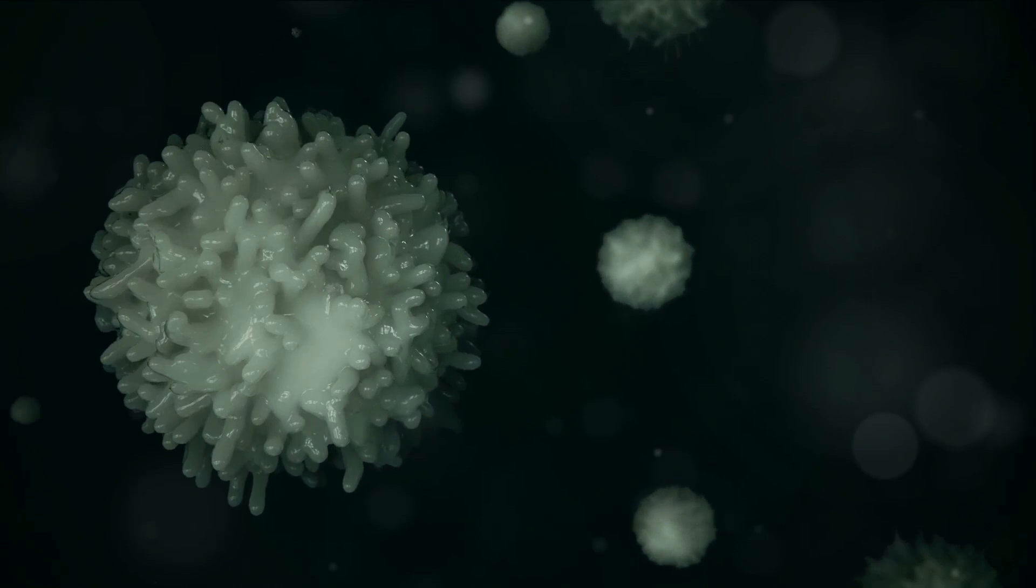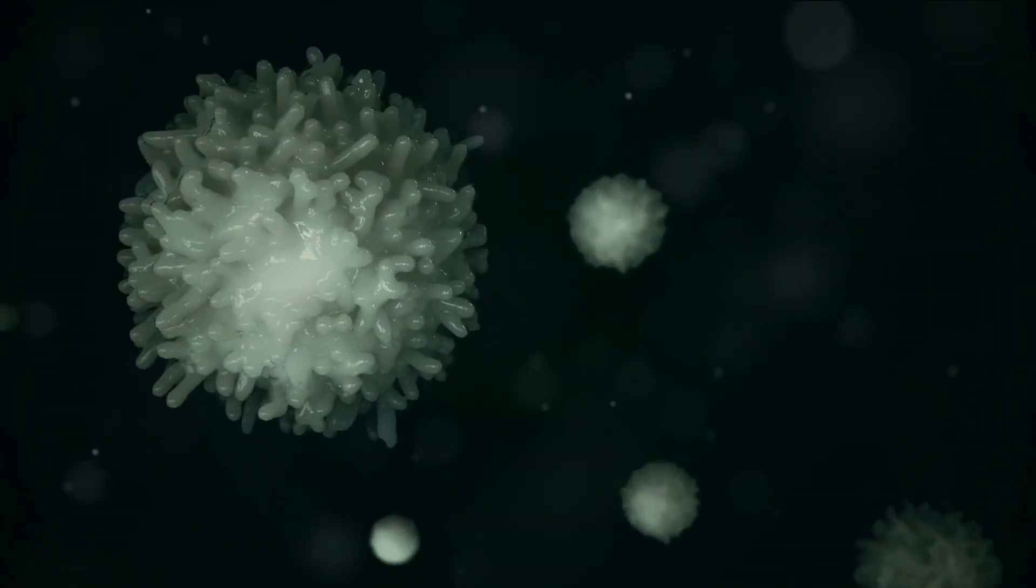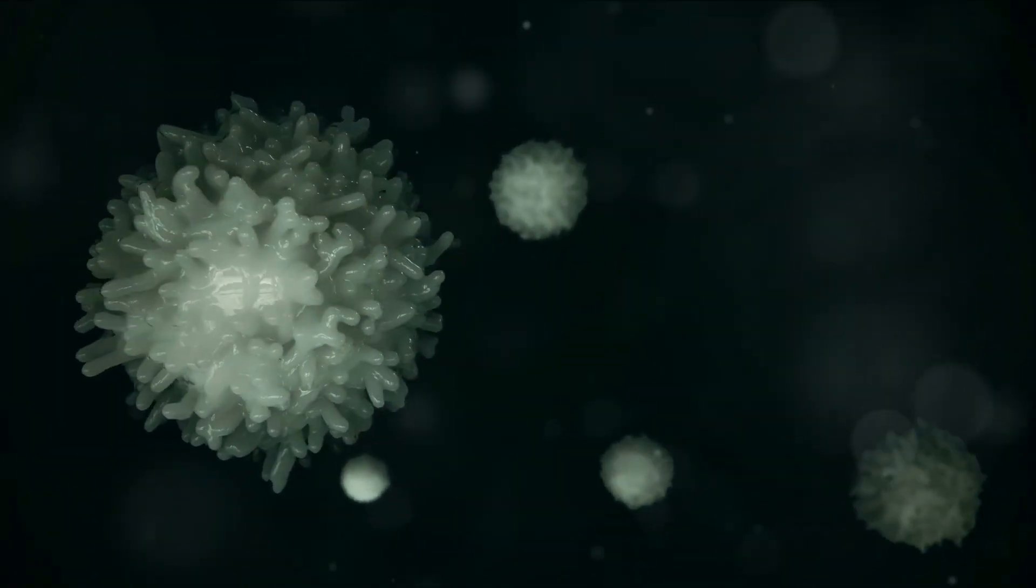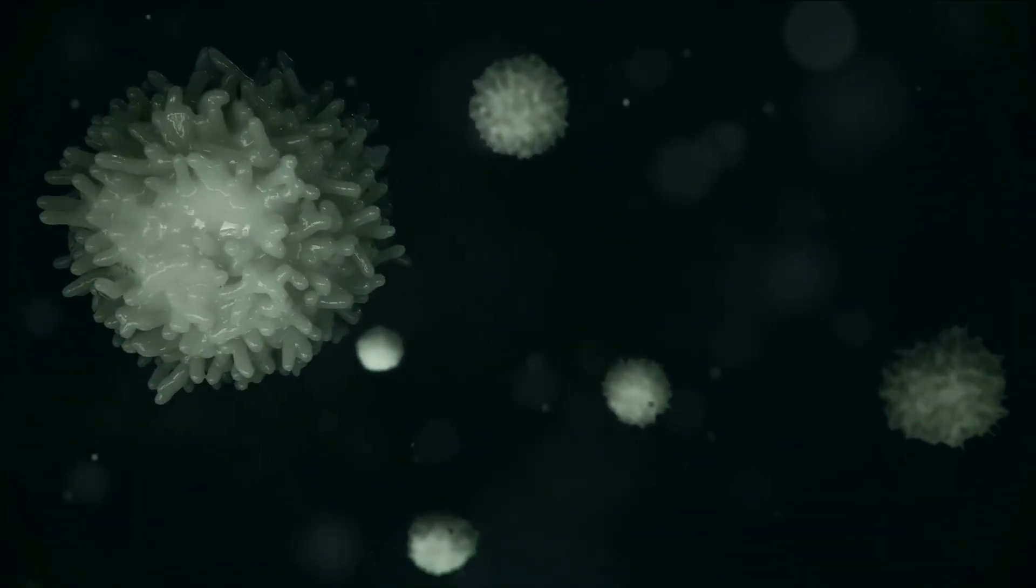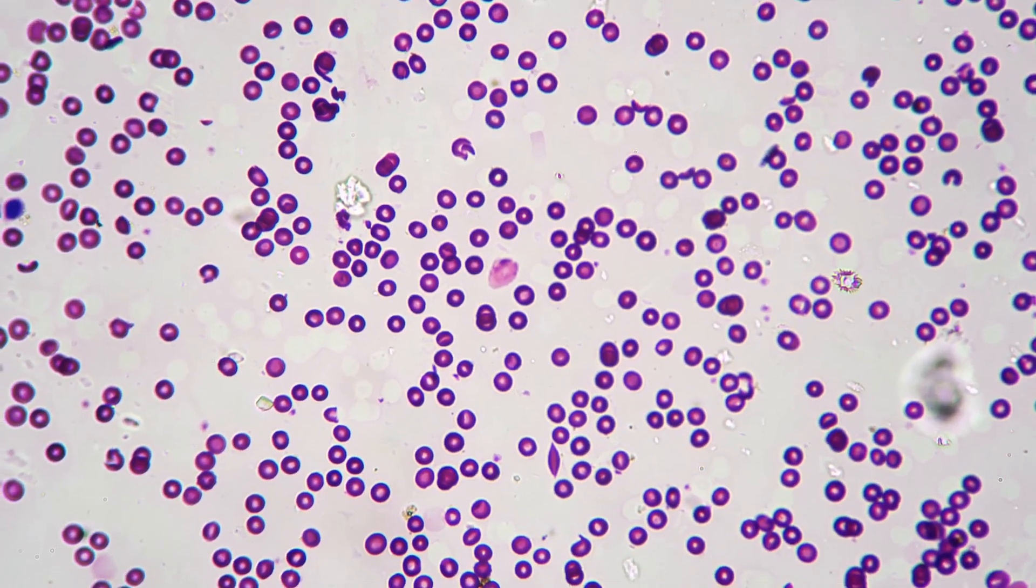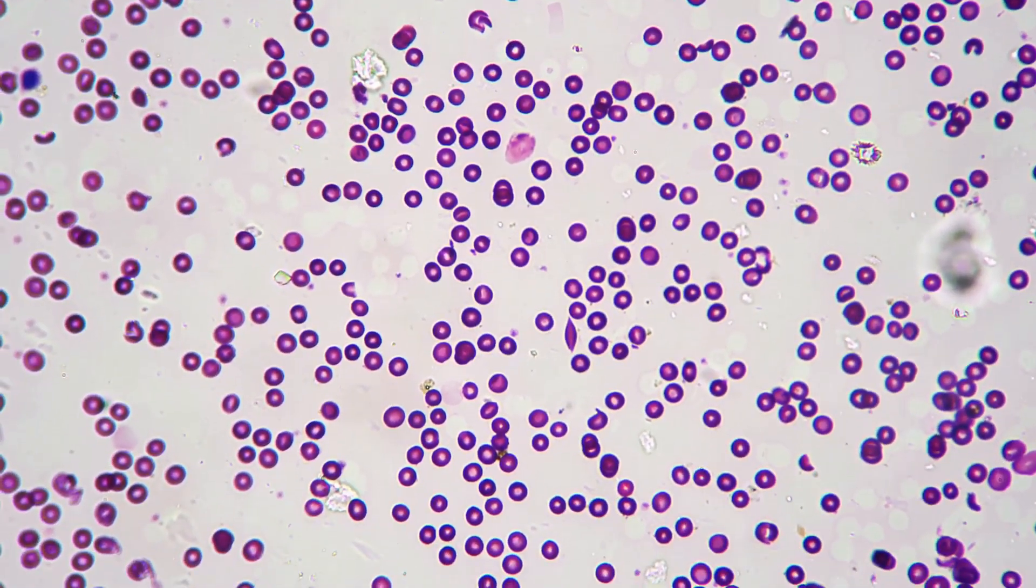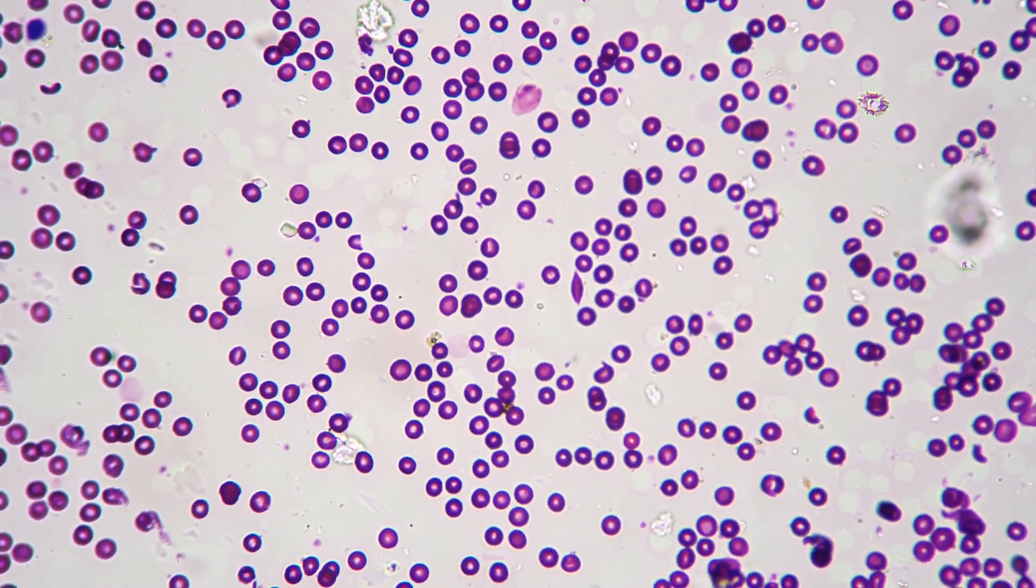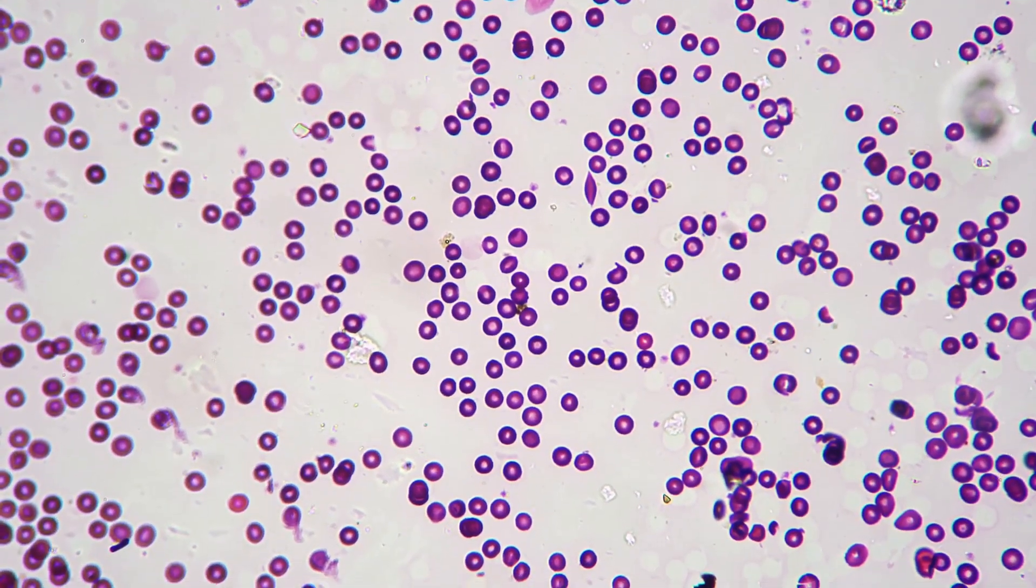Next we have the agranulocytes, the lymphocytes and monocytes. Unlike their granule-bearing counterparts, these cells lack visible granules and have a more rounded nucleus. Lymphocytes, the smallest of the white blood cells, are the brains of the immune system. They remember past infections, allowing a rapid response when the same pathogen invades again.